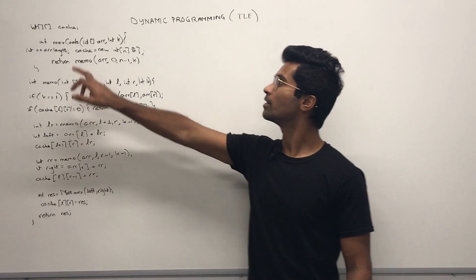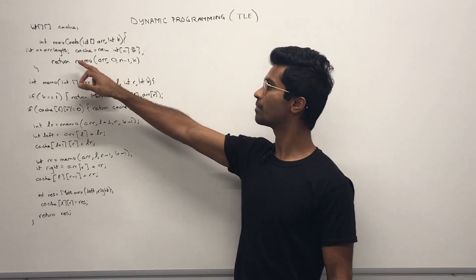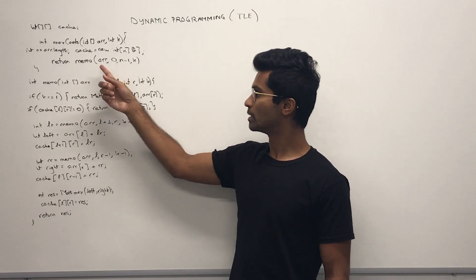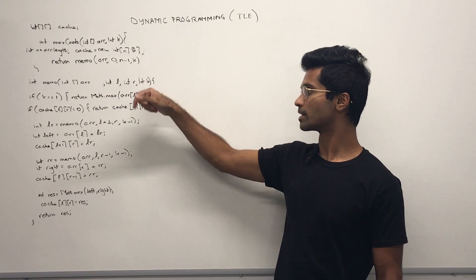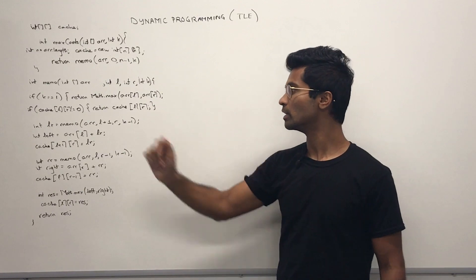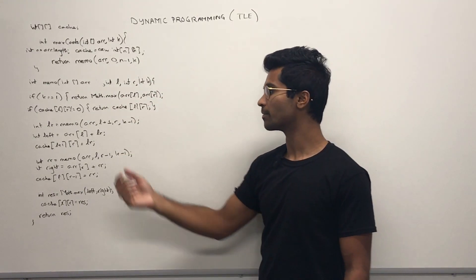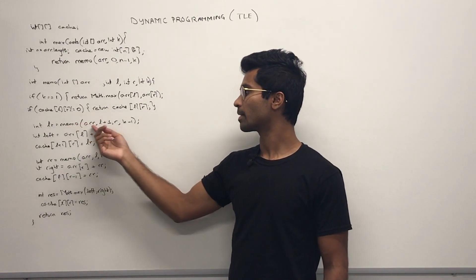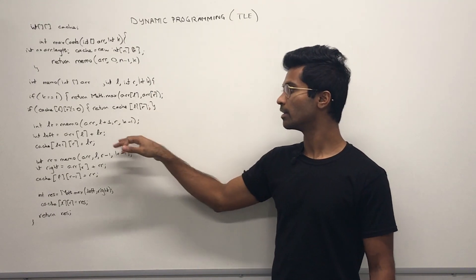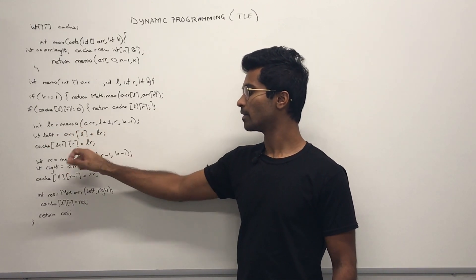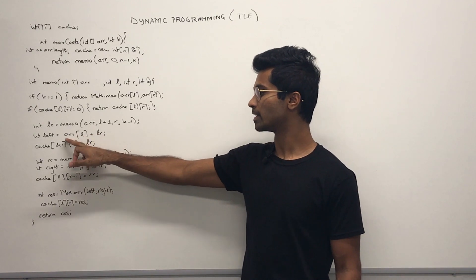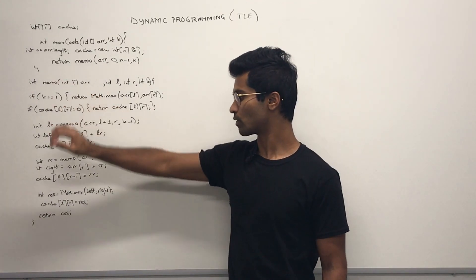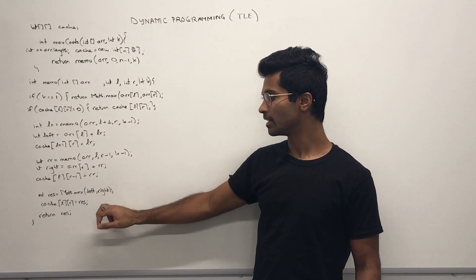Here's the code for the memoized approach. There's a global 2D cache initialized to the length of the array. For the helper method called memo, we take the array, the leftmost and rightmost indices, and pass in k. The base case is: if we only have one move, we return either the left or the right. If we've already cached the result for indexes l to r, we return the cached value. Otherwise, we calculate: we pass l+1 to r with k-1 for the left recursion, store that in the cache, and take arr[l] plus that left recursion for the left potential. Similarly for the right side, we cache both results and return the max of left or right.